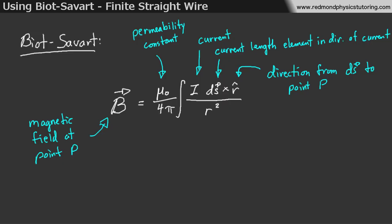On the bottom, we have r-squared, and r is the distance from dS to point P. In front of the integral on the bottom, we have pi, which is yummy, especially apple pi, and 4, which is just 2-squared.